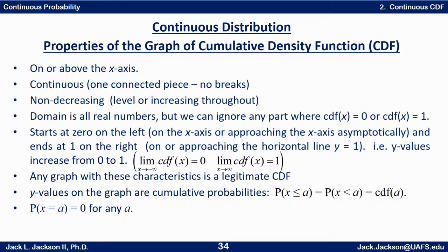The y-values on the CDF graph are cumulative probabilities. So the probability that x is less than or equal to a equals the probability that x is less than a — something that doesn't happen in the discrete case — and both equal CDF(a). This is because in the continuous case the probability that x equals any specific value a is 0, so the strict and non-strict inequalities give the same probability.